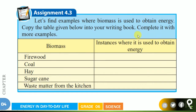Now let's find examples where biomass is used to obtain energy. Copy the table into your writing book, completed with more examples. Biomass such as firewood is used for cooking and boiling water. Coal is also used for cooking. Hay, sugarcane, and waste matter from the kitchen are all used as biomass. Write examples of the instances where each is used to obtain energy inside the boxes, with the help of an elder.